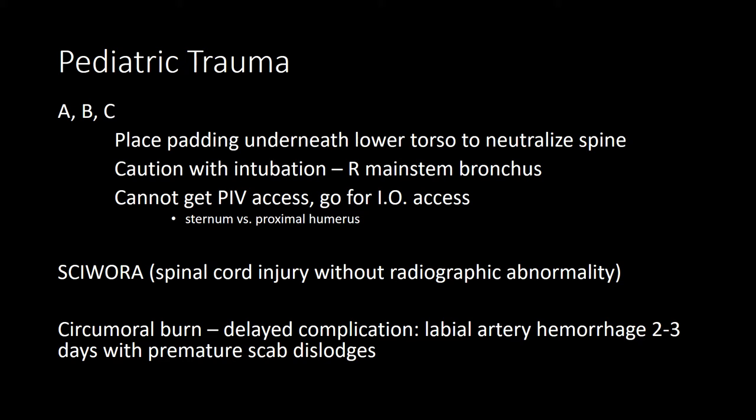During your primary assessment, recognize that children have a disproportionately large occiput contributing to passive flexion of the spine, so place padding below the lower torso to neutralize the spine. Take caution with intubation as the tracheas are shorter in children — you may end up intubating the right main stem bronchus. If you're unsuccessful and the child is less than age eight, you can attempt needle cricothyroidotomy instead of surgical cricothyroidotomy, per the PALS guidelines.